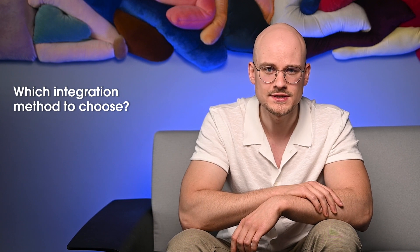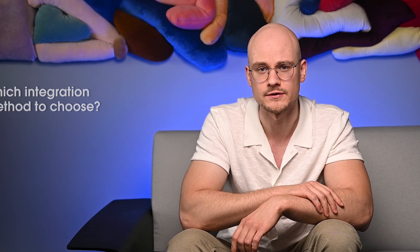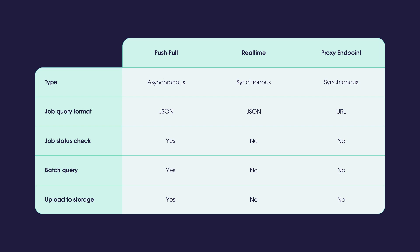Push-pull is the better method if you strive for higher scalability to fetch big data volumes. On average, synchronous methods — real-time and proxy endpoint — are easier to implement and use. However, the need to keep the connection open drains more infrastructure resources. Push-pull is harder to implement but offers better scalability and more helpful features; it doesn't require many infrastructure resources, though you would need to invest some engineering resources at implementation. If you don't mind going the hard way, consider push-pull — it's perfect for scaling up and offers useful features such as job status checks and storage delivery. To avoid the hassle, you can pick real-time or proxy endpoint.